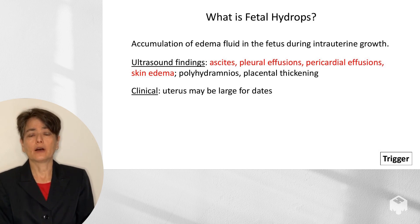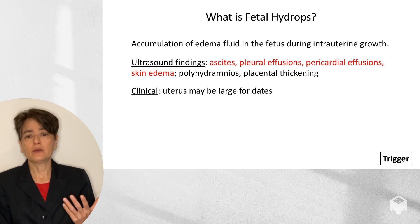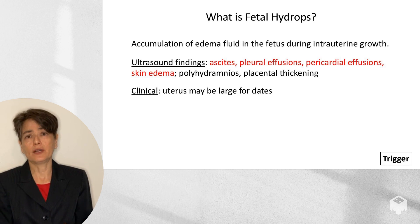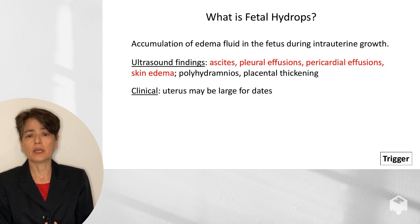So what is fetal hydrops? It's the accumulation of edema fluid in the fetus during intrauterine growth. It's typically identified prenatally through ultrasound. There are a variety of different findings. The four findings highlighted in red are most significant — if two of these are seen on ultrasound, it's diagnostic of fetal hydrops: ascites, pleural effusions, pericardial effusions, and skin edema. You can also see polyhydramnios and placental thickening.